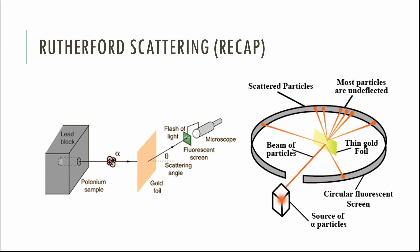You fire alpha particles at a thin sheet of gold foil to figure out what atoms are made of. What we saw was an incredible thing — it was like firing cannonballs at tissue paper, and every once in a while a particle came back. They realized this is not the plum pudding model at all. Something else was happening: there must be a dense, positively charged nucleus. All the positive charge in an atom must be condensed towards the middle.